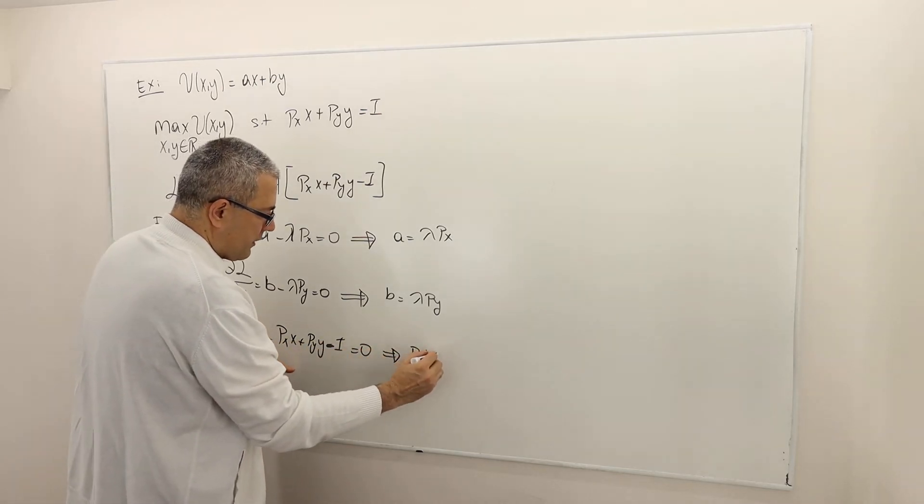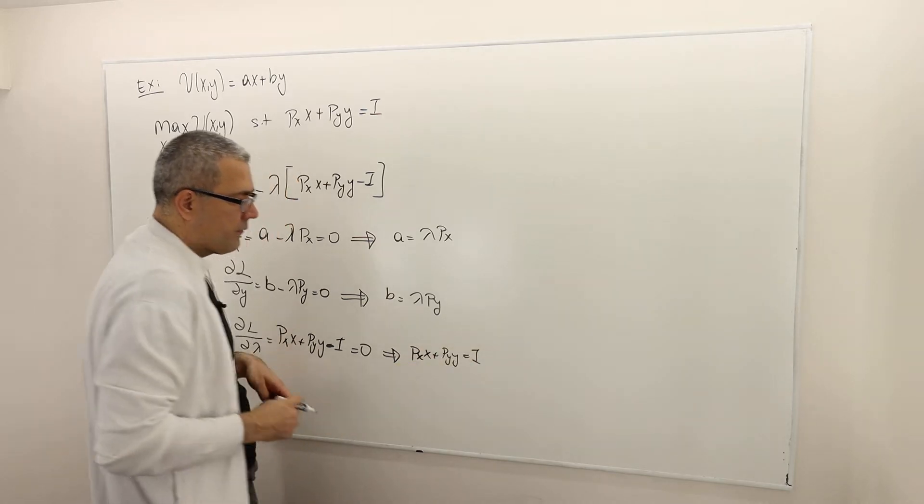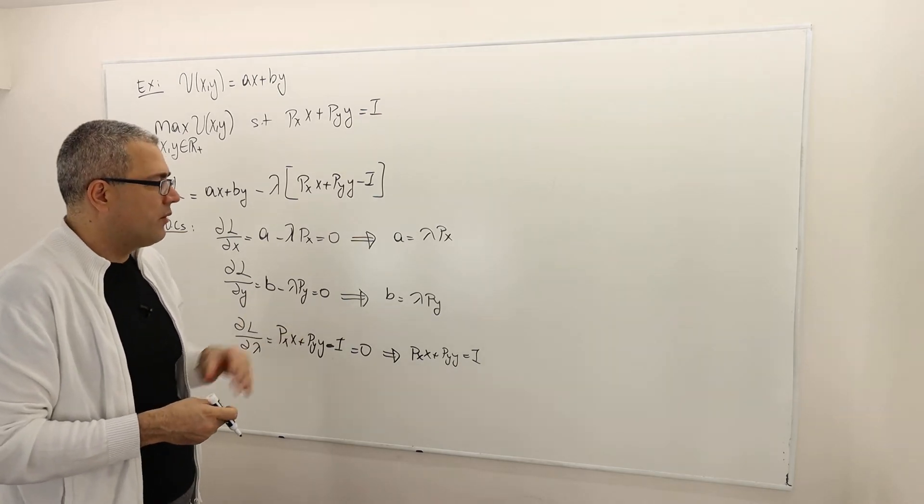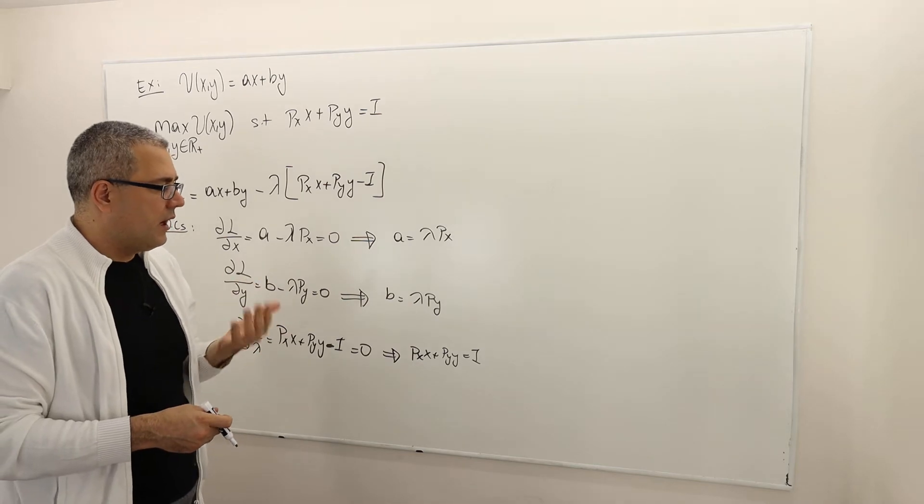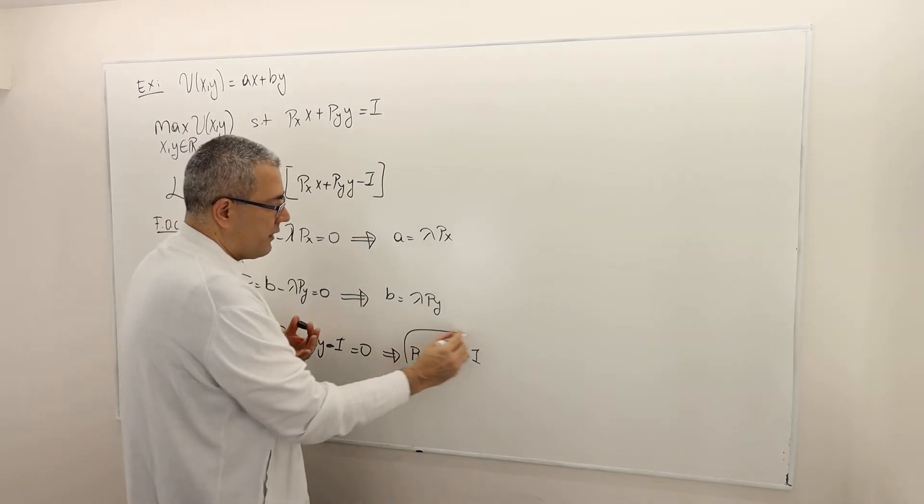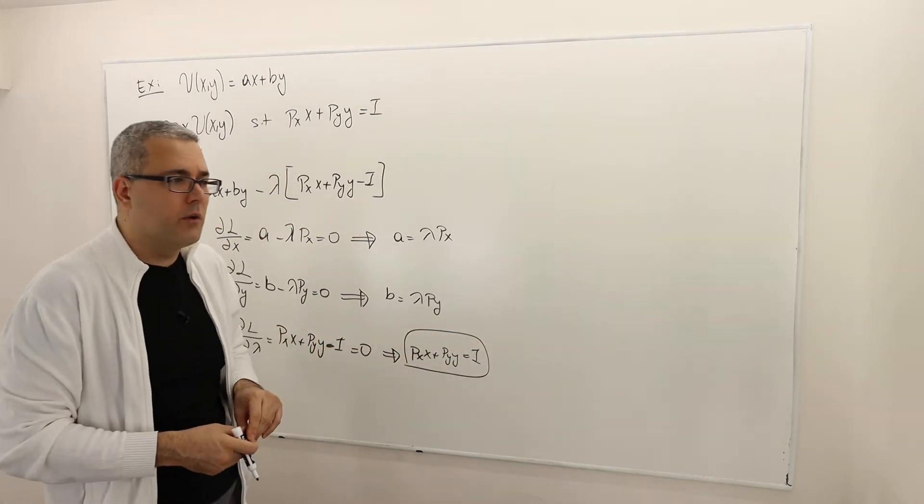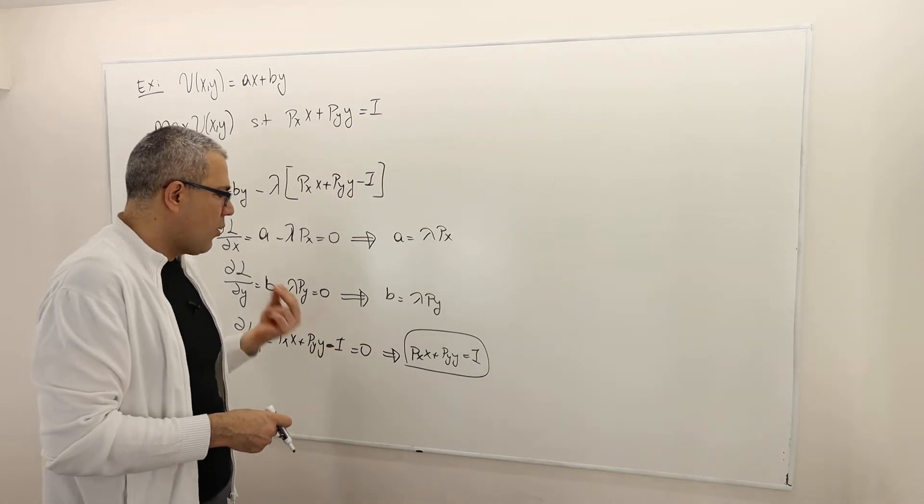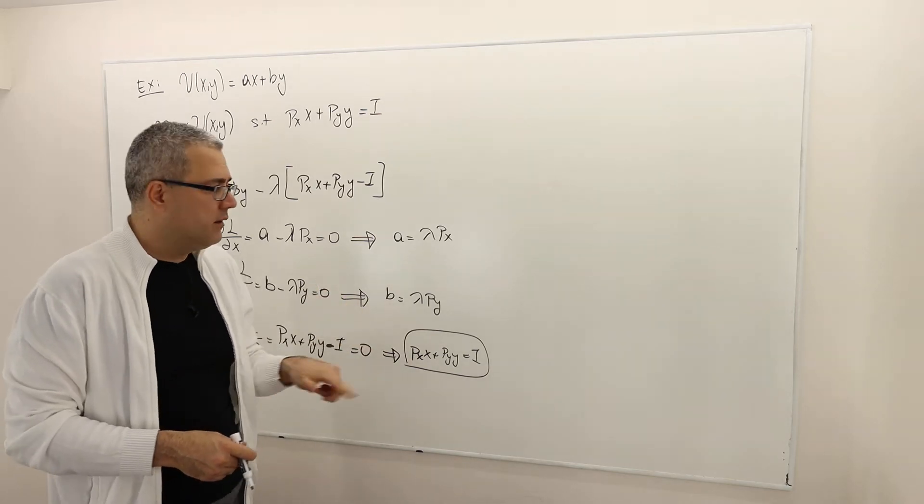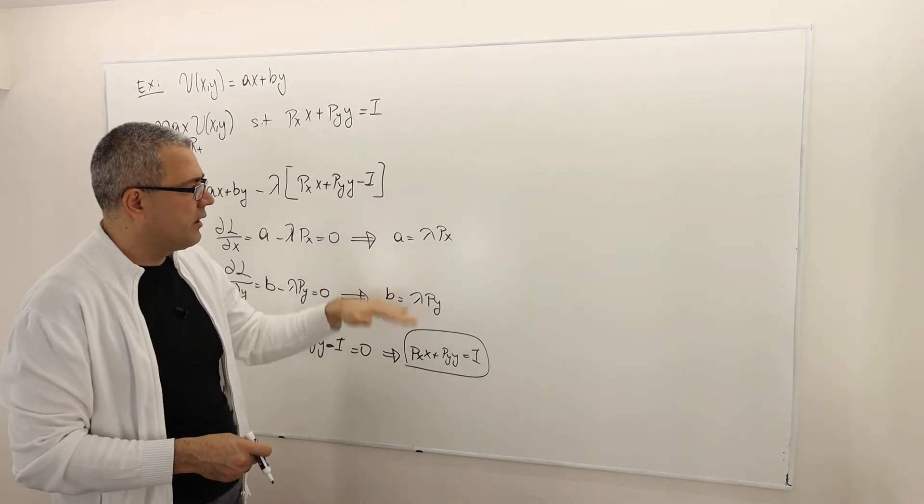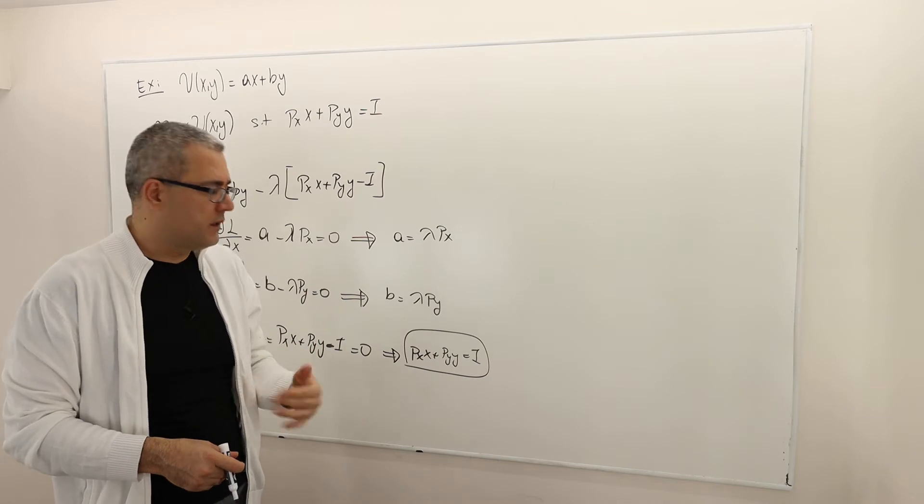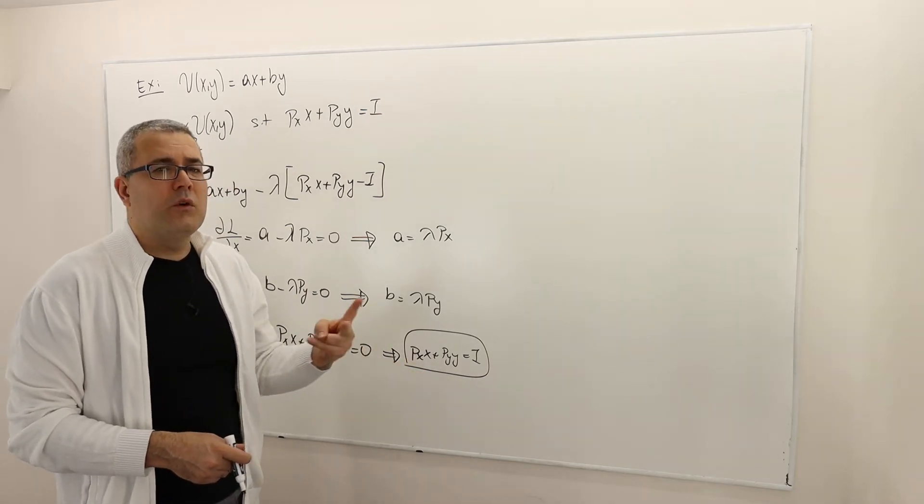So, PX*X plus PY*Y equals income. Unfortunately, some students attempt, because the X and the Y terms have vanished, to figure out the X and the Y terms from this equality alone, which you can't. Because you have one equation which depends on X and Y. These two do not depend on X and Y. So they are useless for you to solve the value of X and Y. You have one equation but two unknowns.